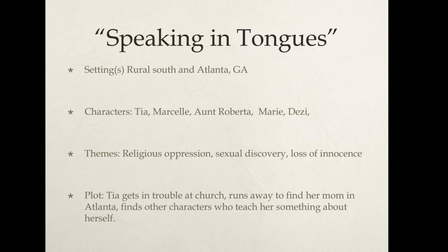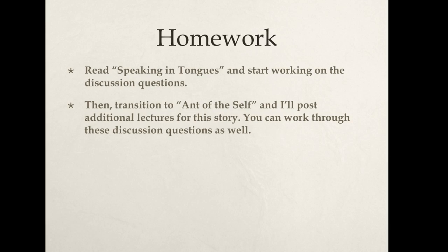The characters are Tia, who is the protagonist; Marcel, her good friend; Aunt Roberta, who is raising Tia; and Marie and Desi, who she meets in Atlanta. The themes overall in this story are religious oppression, sexual discovery, and a loss of innocence. A quick overview of the plot: Tia gets in trouble at church, runs away to find her mom in Atlanta, and finds other characters who teach her something about herself.